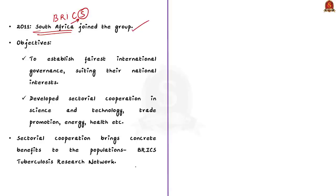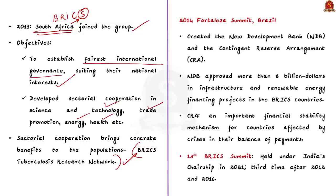When it comes to BRICS, it tries to establish fairest international governance, suiting their national interest. It also tries to reform the international monetary fund quota system. BRICS has developed sectoral cooperation in different areas. This includes science and technology, trade promotion, energy, health, education, innovation and fight against transnational crime. This sectoral cooperation covering more than 30 areas brings concrete benefits to the population of the five countries. For example, let us take BRICS tuberculosis research network. This network aims to introduce quality medicines and diagnosis with affordable prices. Another milestone in BRICS history is the 2014 Fortaleza summit in Brazil.